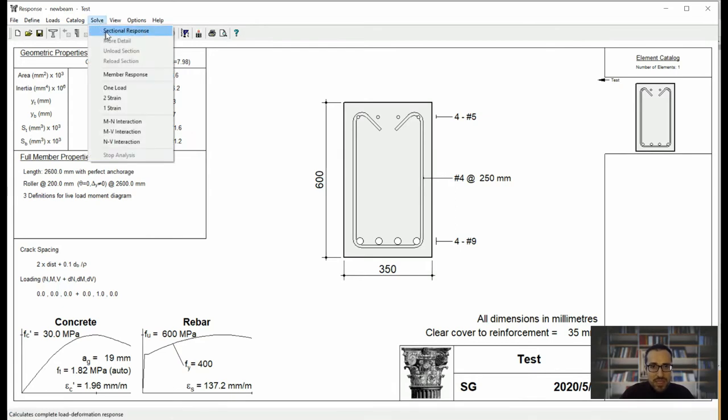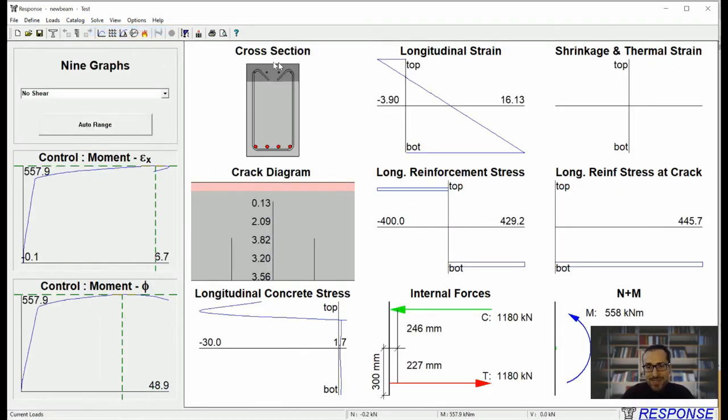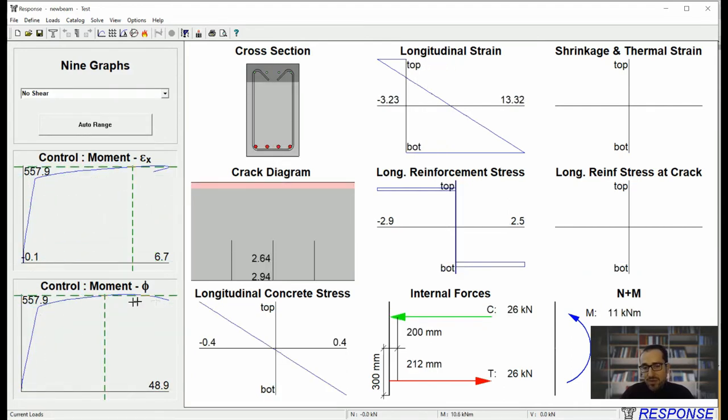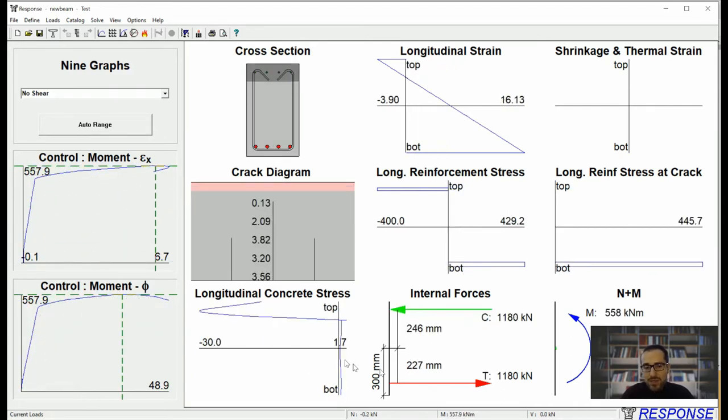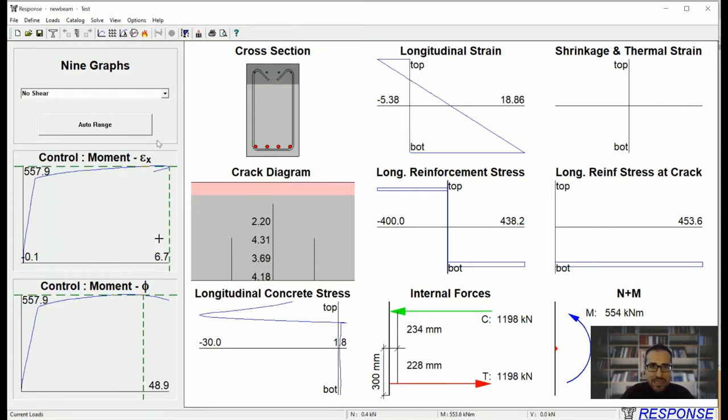If you want to do a sectional analysis, that's very simple. You just click on sectional analysis. This is going to give you moment curvature result and as you can see, you can see the sectional forces, moment is going to be the one which is included. Axial force is zero, shear force is zero. They are not considered.